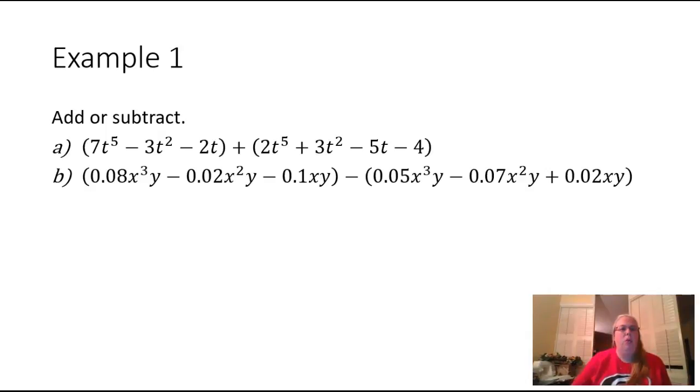So in example one, we can see that there are seven t to the fifths here and there are two more back here.